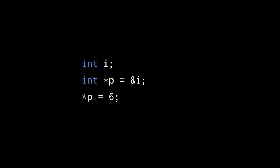In the last line, we're assigning the int value 6 to the dereference of p, meaning the value 6 is copied to that address represented by the pointer value. Because p represents the address of i, this assignment does the same thing as if we assigned 6 to i directly.